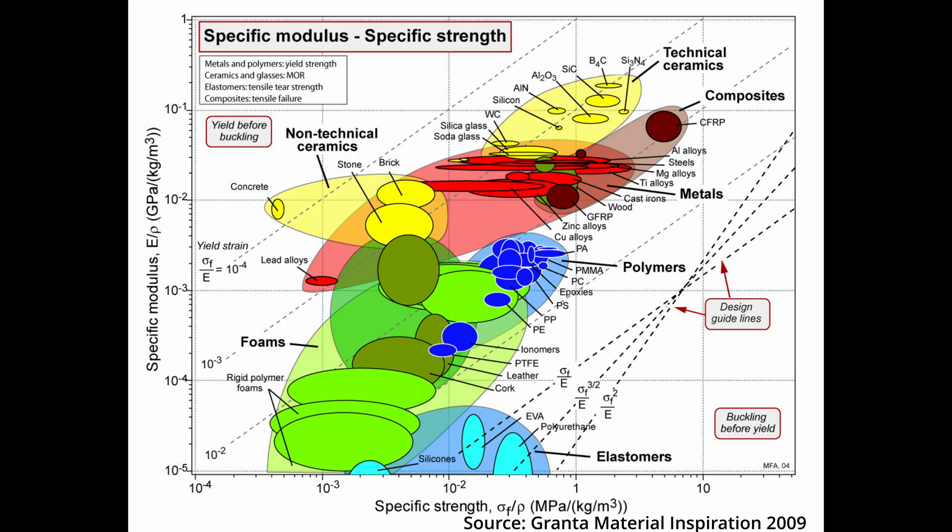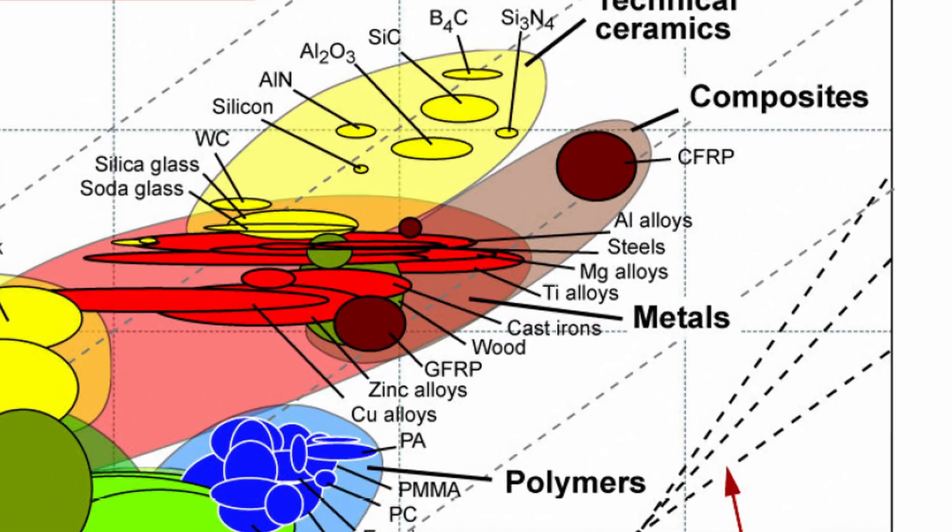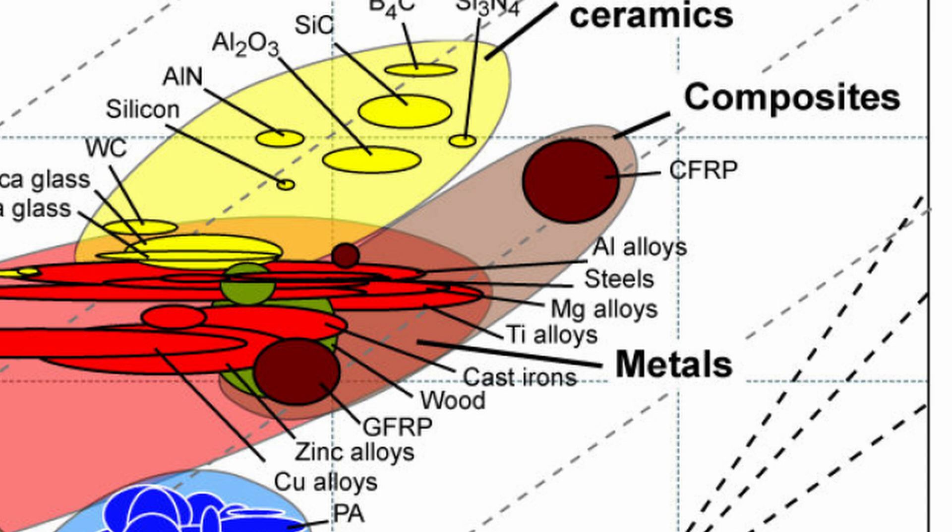I won't spend too much time here, but if we zoom into the chart, we can see that the composites have a better stiffness and strength to weight ratio than all metals. That means if you were to design two bikes of the same stiffness and strength, carbon fiber would be lighter.